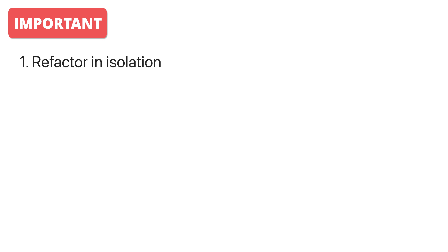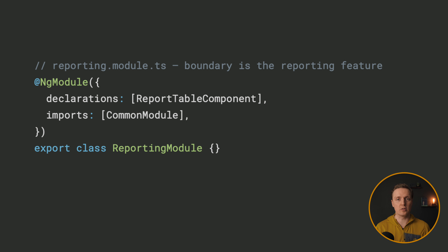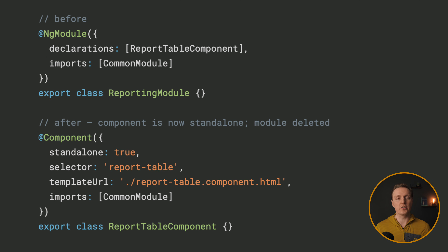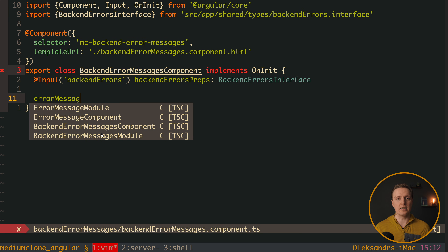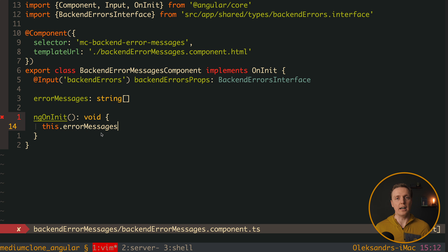Now I want to share some rules you need to stick to if you want to make your upgrade easier. First: refactor in isolation. If you want to migrate from modules to standalone components — and just to remind you, modules are deprecated and it is better to write standalone components nowadays — you should not try to remove all modules at once. Since they are deprecated but not removed, you can go one by one and refactor a single module to a standalone component, starting with smaller ones, verify it still works, then proceed.